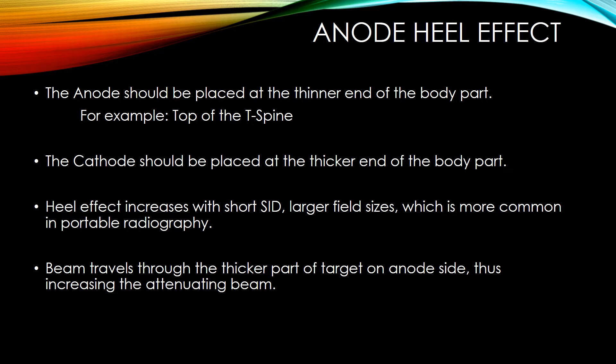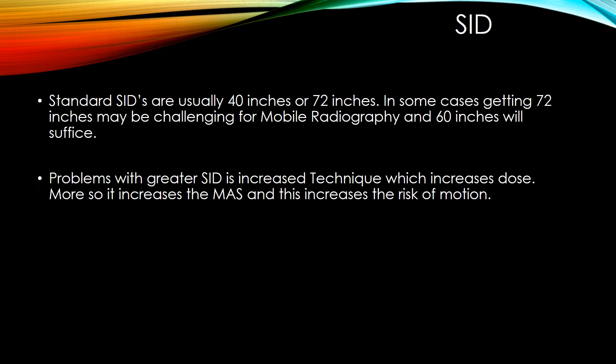The beam travels through the thicker part on the anode side, thus increasing the attenuating beam. Standard SIDs are usually 40 or 72 inches. In some cases, getting 72 inches may be challenging for mobile radiography, and 60 inches will suffice. Problems with greater SID include increased technique, which increases dose — more specifically, it increases the mAs, and this increases the risk of motion.